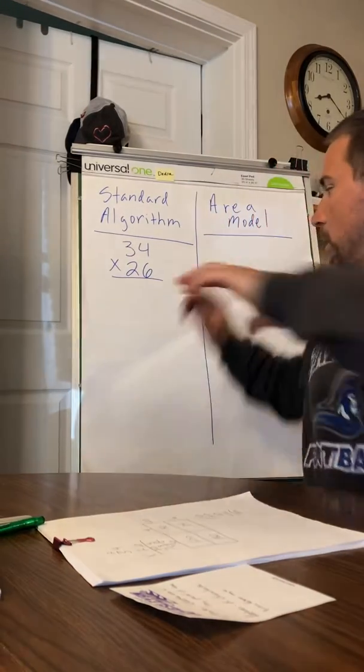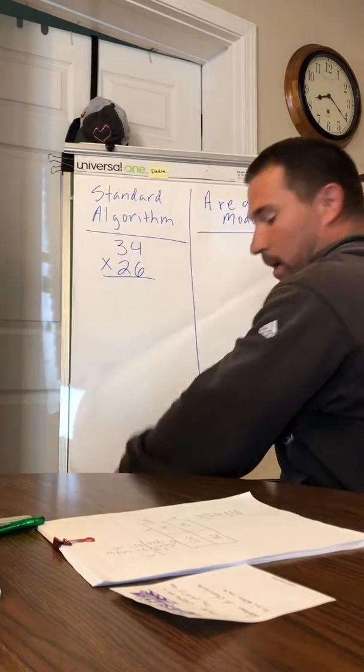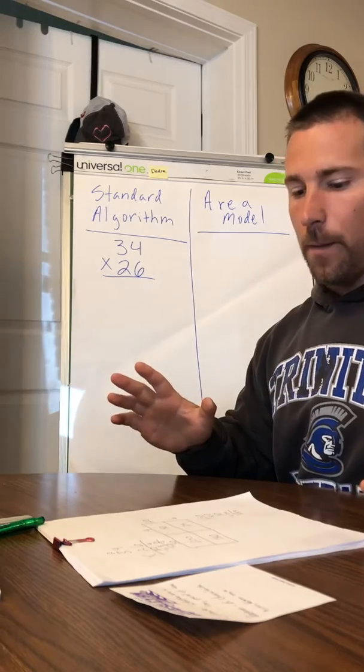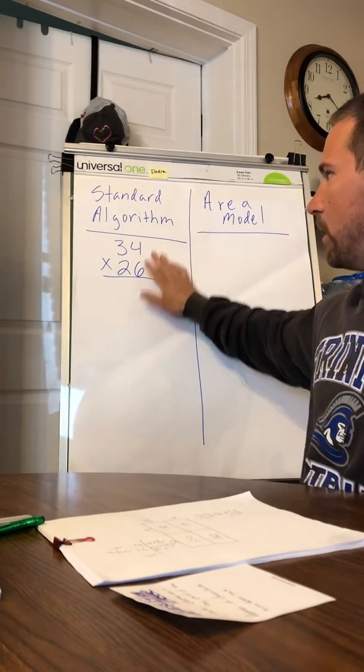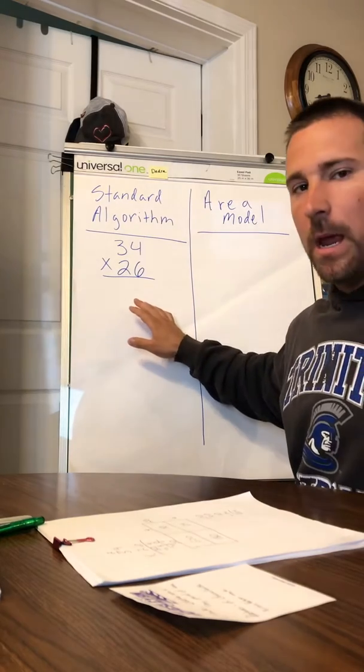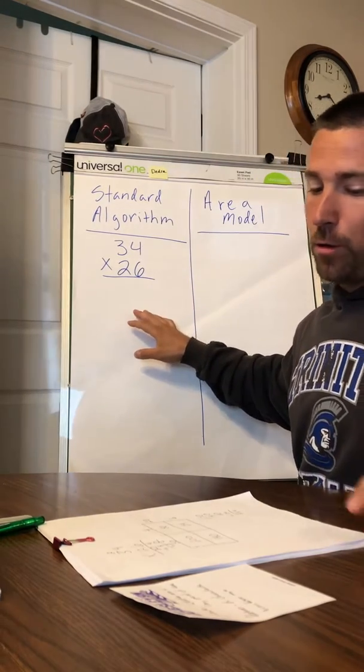Hey guys, hopefully you can see me and this. I'm going to do this multiplication problem: 34 times 26. I'm going to do it with the standard algorithm, and then I'm also going to show you how to solve it using an area model.